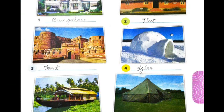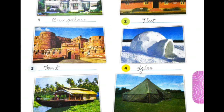The third one is a fort. Fort means killer. Fort means kya hotta hai? Killer. It is made up of large and heavy rocks. Rocks means pathar.